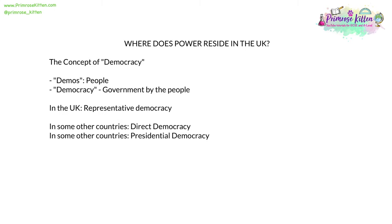Let's look at the concept of democracy. 'Demos' means people, so democracy is government by the people. In the UK, we have a representative democracy. In some other countries, they have a more direct democracy, such as Switzerland, where many affairs are dealt with using referendums. And in some other countries, they also have a presidential democracy, such as the United States.